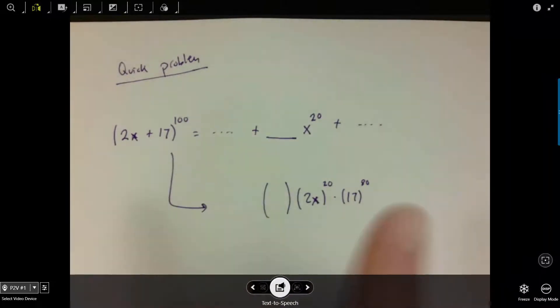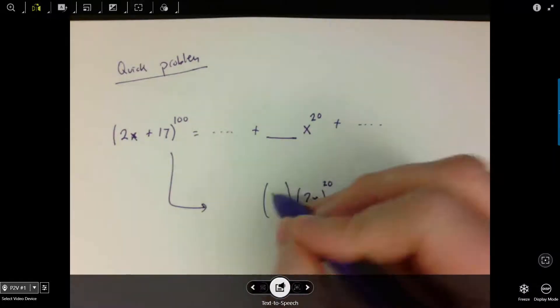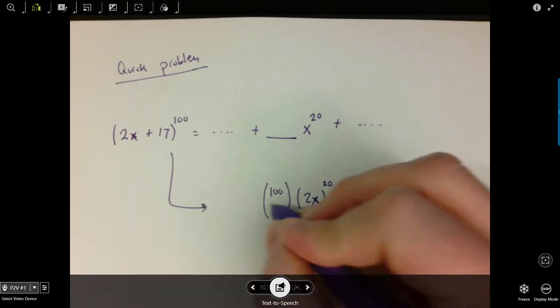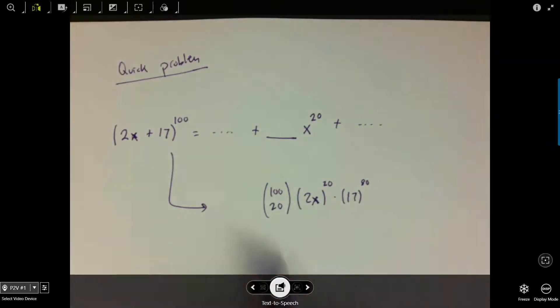And the number of different ways that I could do that is 100 choose 20, because I've got 100 of these pairs, and I'm choosing 20 of them to be 2x.